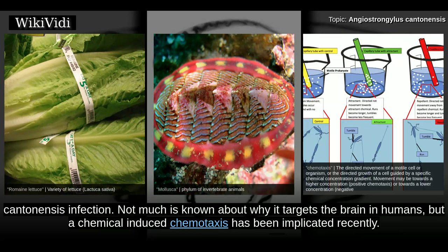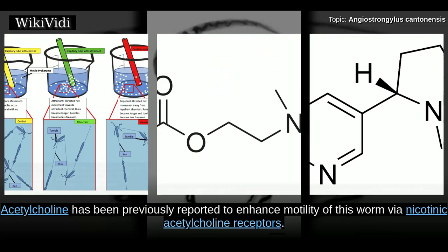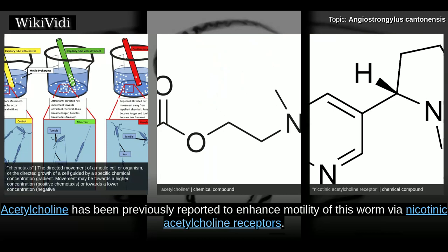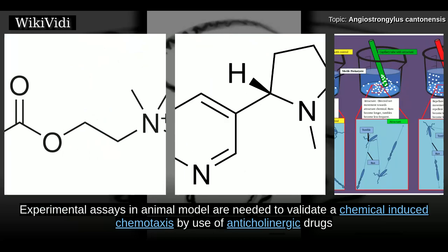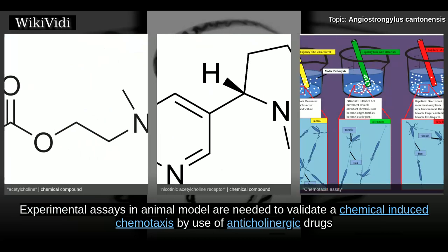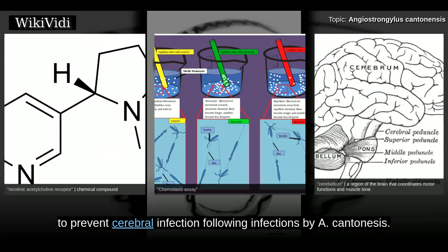Not much is known about why it targets the brain in humans, but a chemical-induced chemotaxis has been implicated recently. Acetylcholine has been previously reported to enhance motility of this worm via nicotinic acetylcholine receptors. Experimental assays in animal models are needed to validate chemical-induced chemotaxis by use of anticholinergic drugs, to prevent cerebral infection following infections by A. cantonensis.